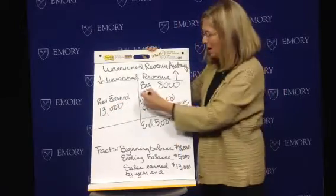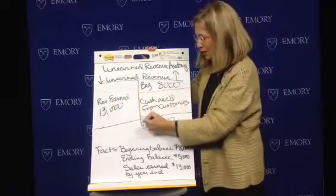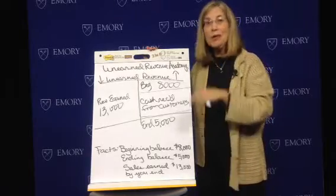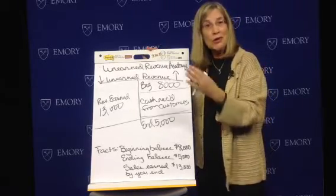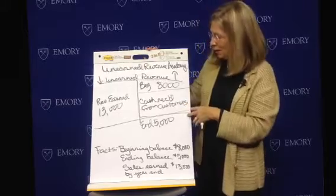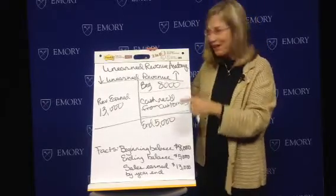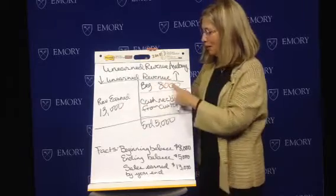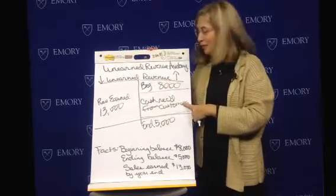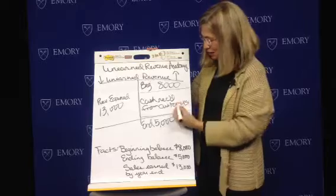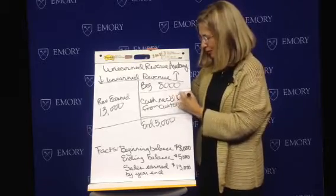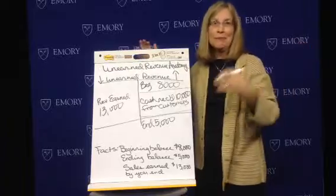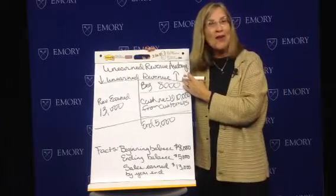The question is: how much cash did we receive from customers before we rendered any services or provided the goods? If I reverse my signs: $5,000 plus $13,000 minus $8,000 means we received during the period a total of $10,000 from customers before we did anything. So that's unearned revenue.